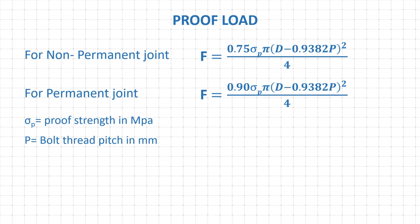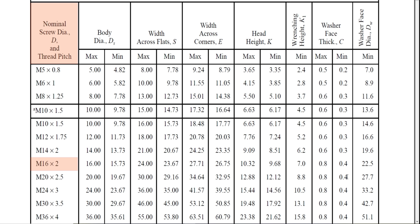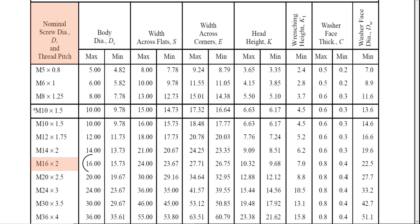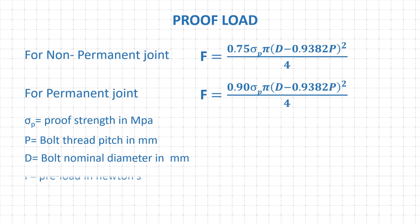Here symbol P is the thread pitch. As you can see here, for M16 bolt thread pitch is 2 mm. And D is the bolt nominal diameter and it is 16 mm for M16 bolt. After putting all these values we can calculate bolt preload.